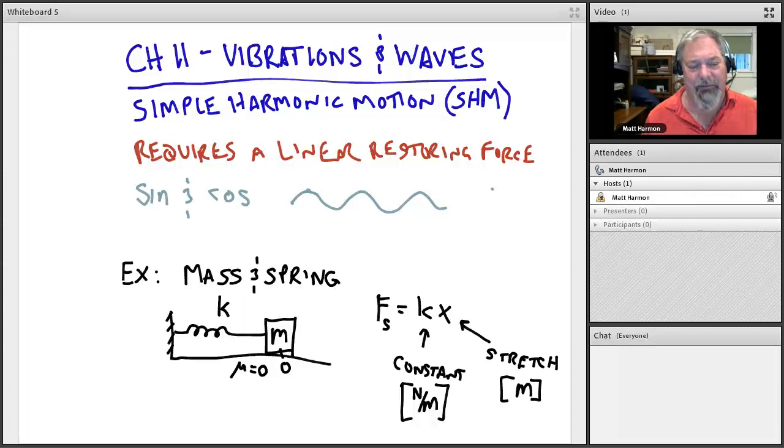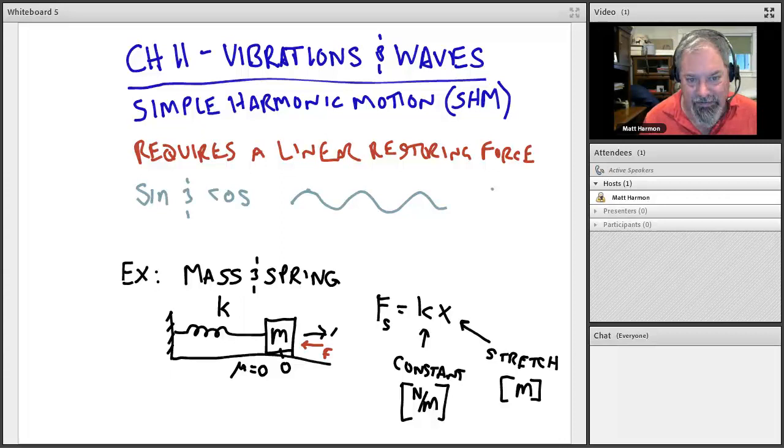Spring constant is measured in units of newtons per meter. That makes sense because we're going to get newtons of force out of this spring for every meter that you stretch it. The stretch will be measured in meters since it is a distance, and the key here is that it is measured away from some sort of equilibrium position. So this is our equilibrium position, and so this is our system.